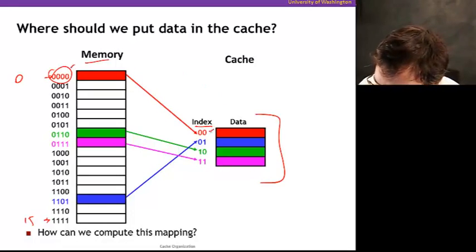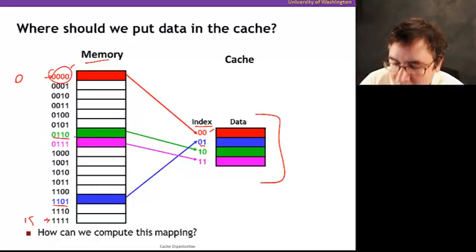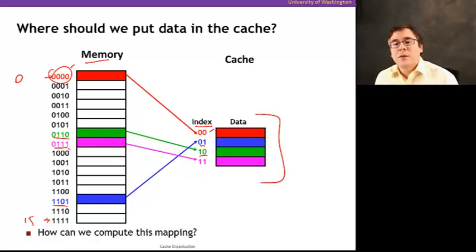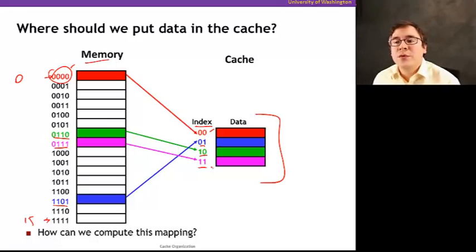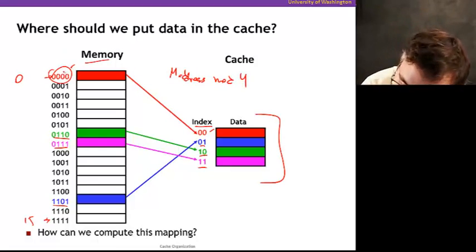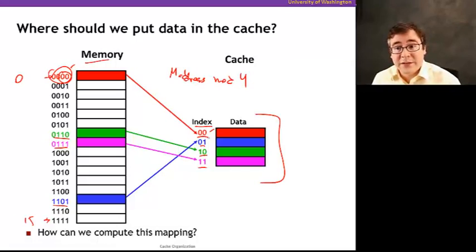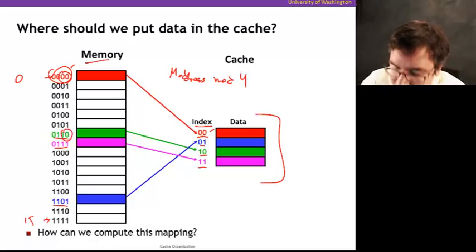One way we can go about doing that is to use the address and compute the index — the location in the cache where the data goes. For example, address 0000 goes to index 0, address 1101 goes to index 1, and so on. It's just modular arithmetic: I get the memory address and do mod 4, which is the same as taking the two low-order bits of the memory address and using those to address the cache.